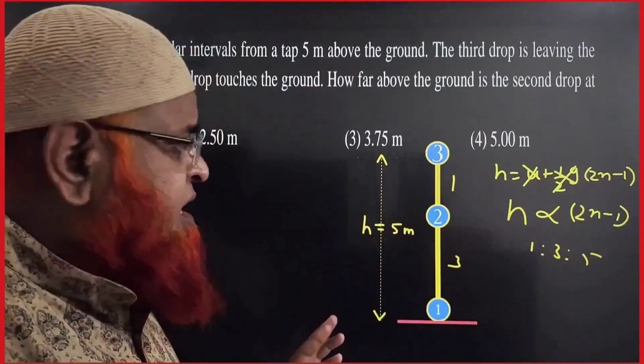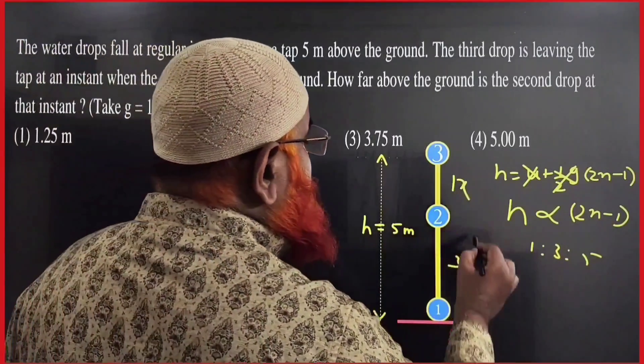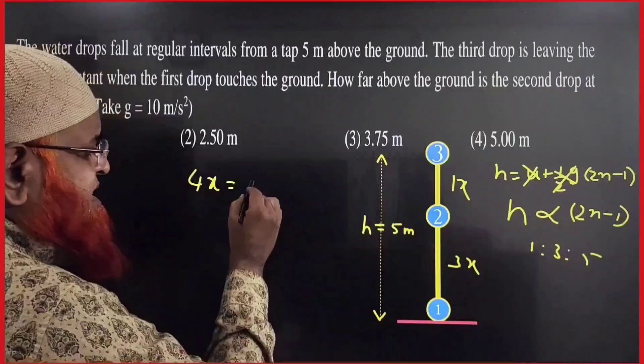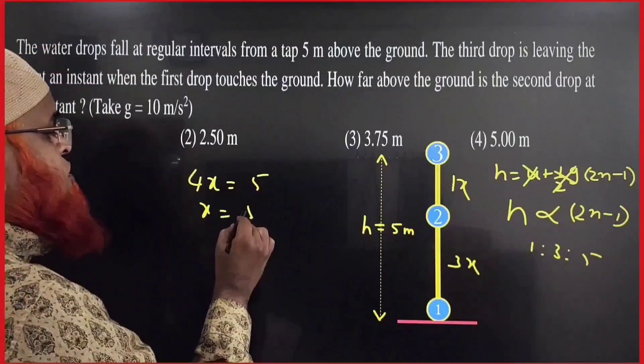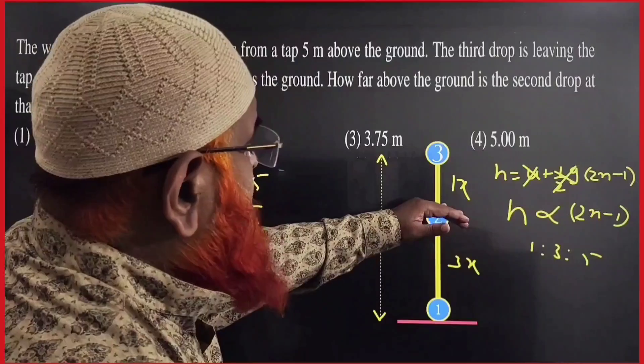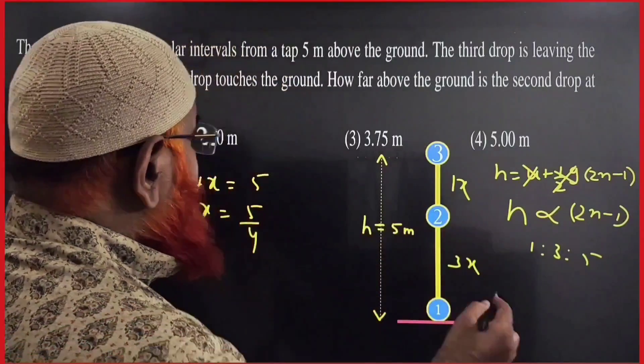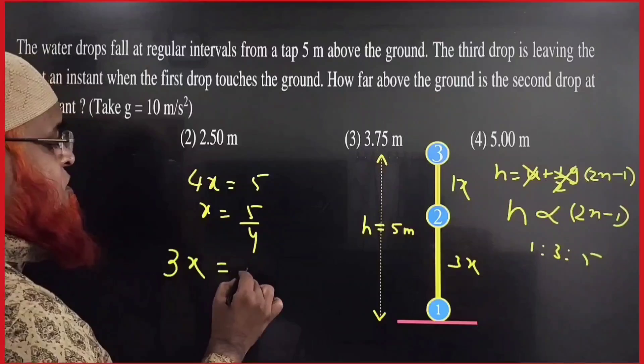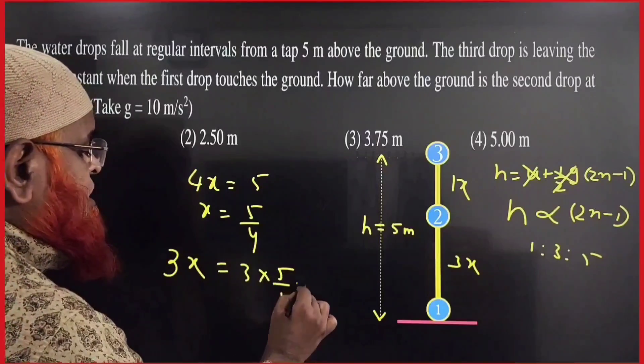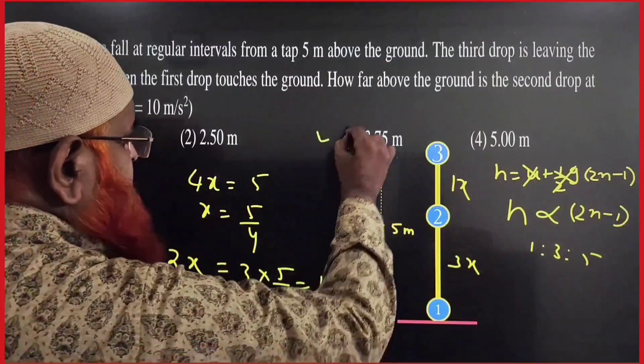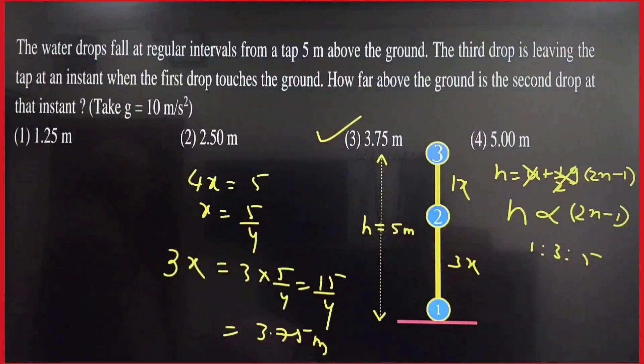So, let us take this as 1x and this is 3x here. So, the total distance is taken as 4x and the total distance given as height h is nothing but 5 meters. x equal to 5 by 4 is the value here. So, distance of the second drop from the ground is taken as 3x. Therefore, this is equal to 3 into 5 by 4 which is nothing but 15 by 4 which is going to be 3.75 meters is your answer. So, simple and shortcut method.